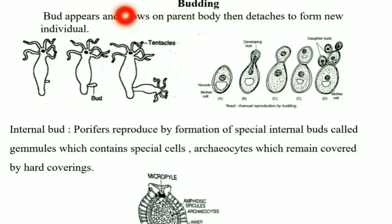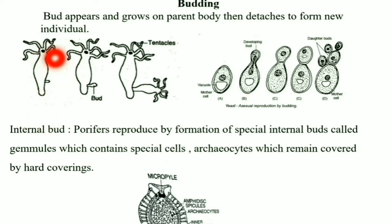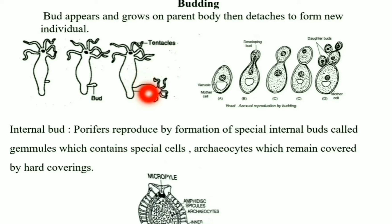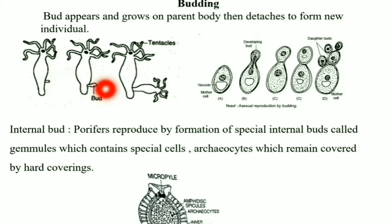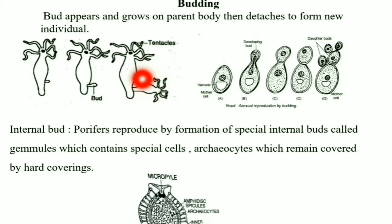Budding: In this method, a bud appears and grows on the parent body, then detaches to form a new individual. It is of two types: external budding and internal budding. In external budding, the bud grows on the surface of the parent body, matures, and then detaches to form a new individual. The exogenous bud gets its nourishment from the parent till maturity, then breaks off and develops into a new individual. Sometimes the buds do not separate off and form a chain of buds, as seen in yeast.